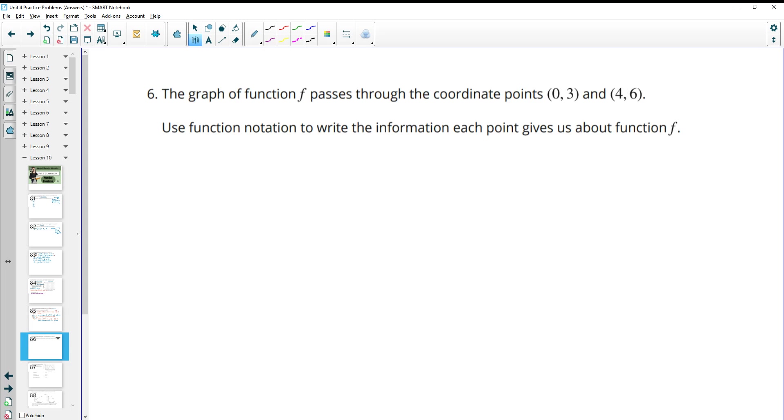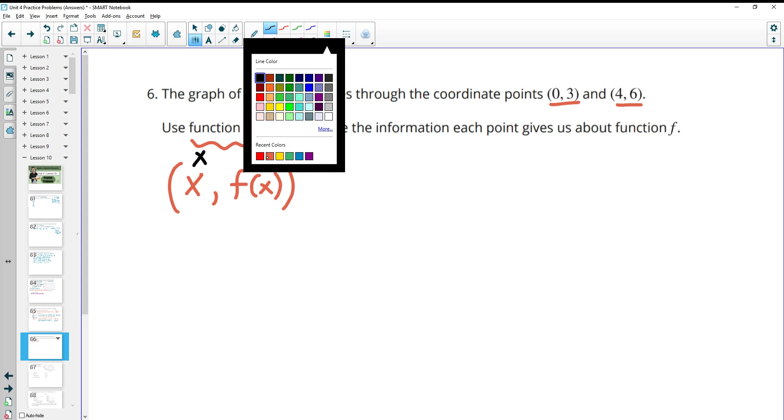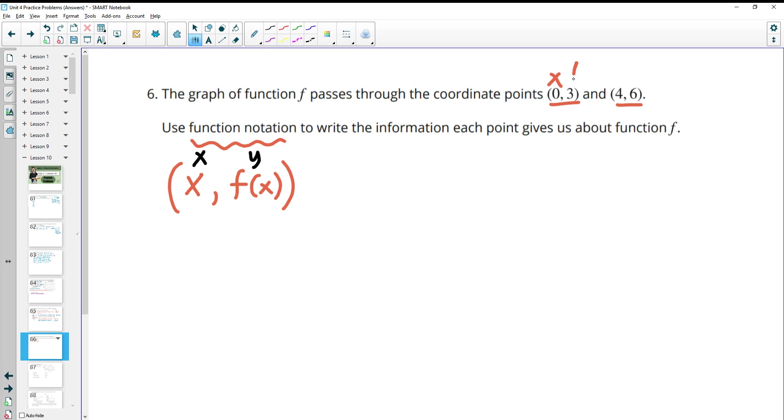Number 6. The graph of function f passes through the coordinates (0, 3) and (4, 6). Use function notation to write the information each point gives us about the function. So remember that when we have an ordered pair, we always have x, and then the output when x is put into the function. So an ordered pair is (x, f(x)). So f(0) = 3 is what this is looking for. The input to the function 0 gives us back 3. And in this other one, the input is 4. So if we plug 4 into the function, we get back 6.